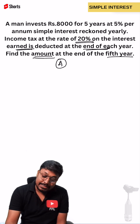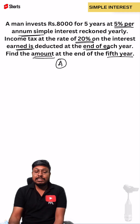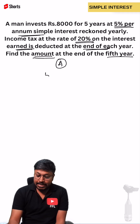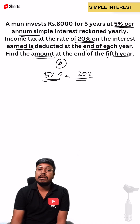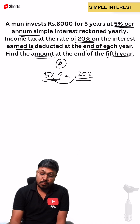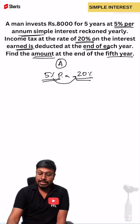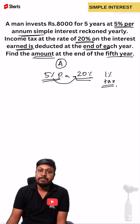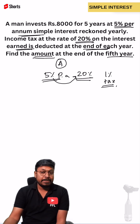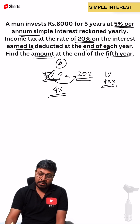The interest he is actually getting is 5% per annum, and 20% is the tax deduction. So 20% of 5% equals 1%. That means 1% tax is deducted every year. So instead of 5% per annum, we can take the effective rate as 4% per annum, and now we can solve the question easily.